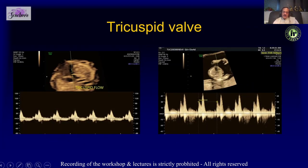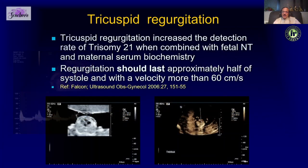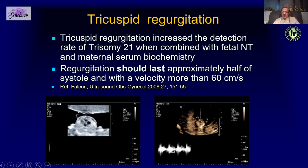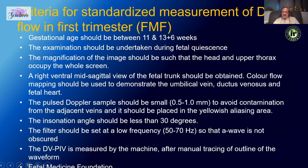We also assess the tricuspid valve. The picture has to be adequately zoomed, and you increase your sample size to cover the tricuspid valve well. That is the normal tricuspid valve with the E-wave and the A-wave — normally you might see a little regurgitation but it should not be more than minimal.